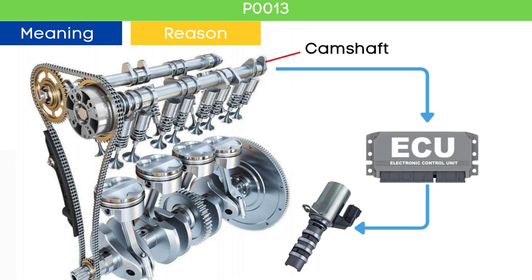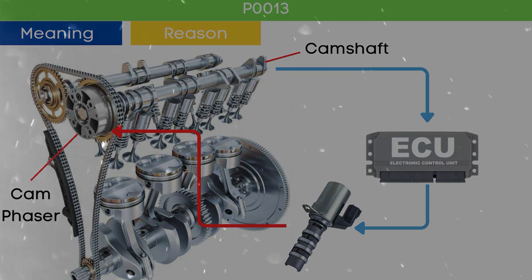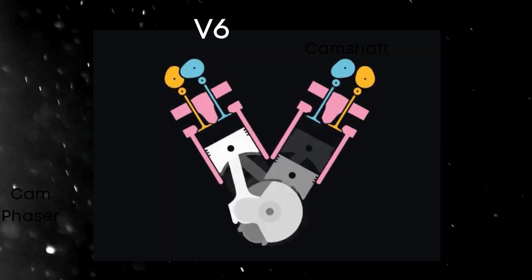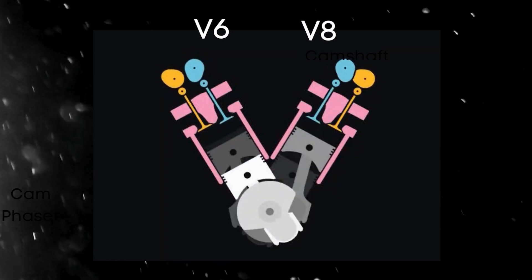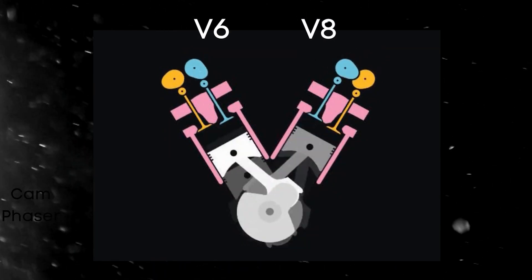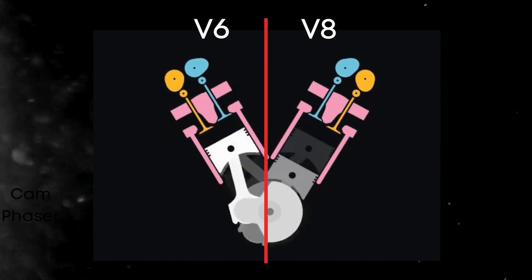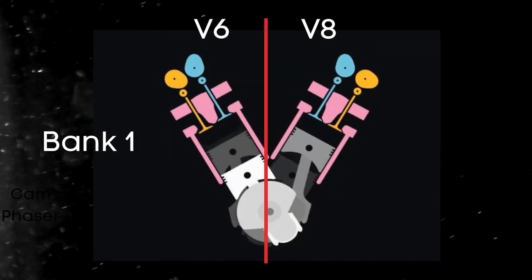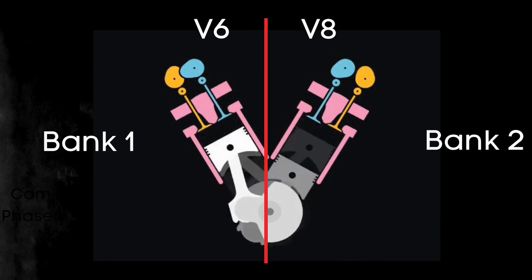The VVT solenoid adjusts the cam phaser accordingly. In the case of V6 or V8 engines, there are two camshafts — Bank 1 and Bank 2.